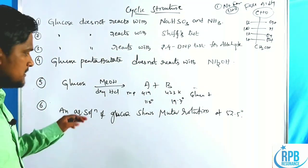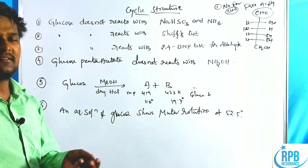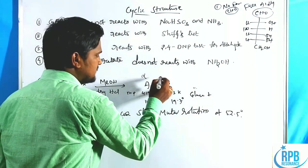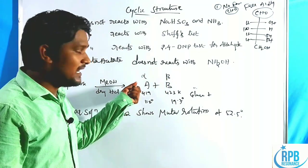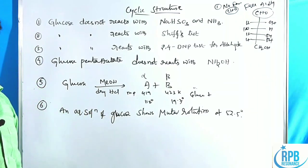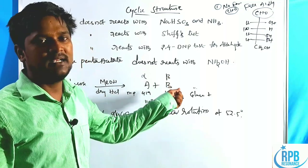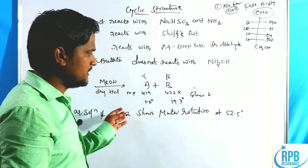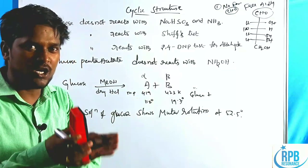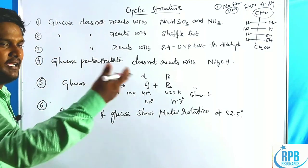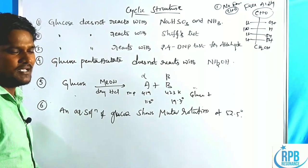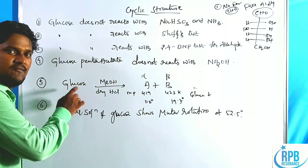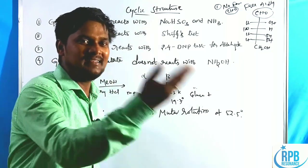Fifth, when glucose is treated with methanol in the presence of dry HCl, we get a mixture of two products: alpha and beta isomers — specifically alpha methyl glucoside and beta methyl glucoside. A single free aldehyde compound cannot give a mixture of two compounds. This reaction is therefore helpful in confirming that glucose does not have a simple open chain free aldehyde structure.